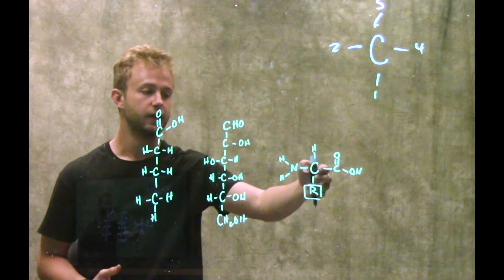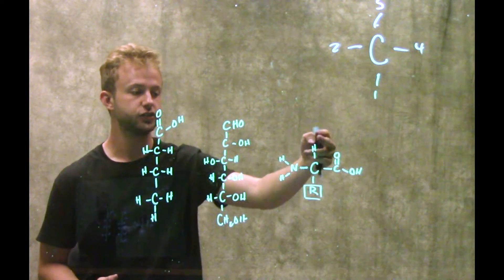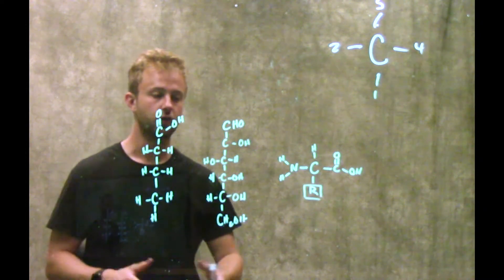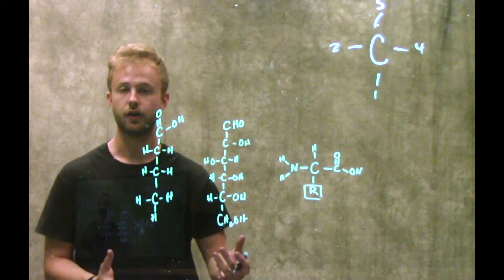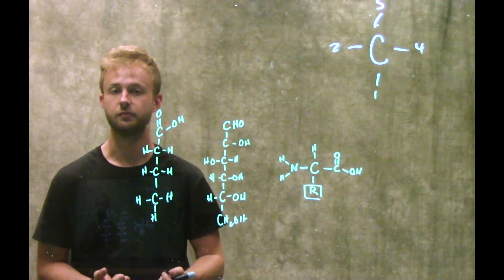We have carbon attached to nitrogen, to another carbon, a hydrogen atom, and then this R stands for the variable side chain on that amino acid. All of these molecules are made possible because of carbon's ability to form these different covalent bonds.